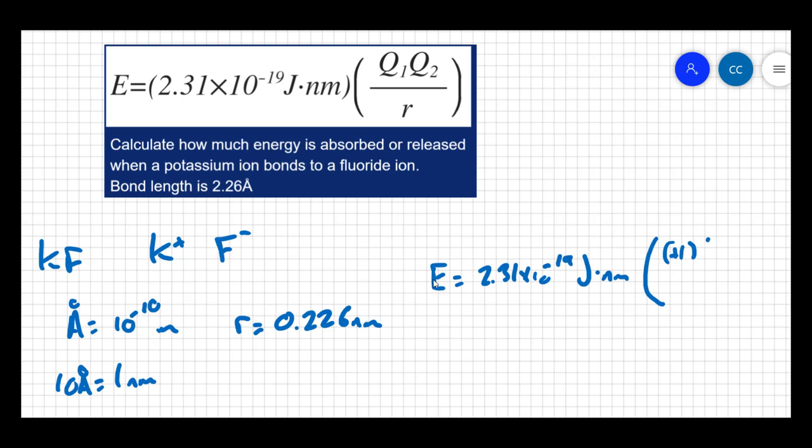Times Q2, which is just the charge of the fluorine, minus one. And then I'm going to divide that by my distance, which is the bond length in nanometers. That's going to be 0.226 nanometers.